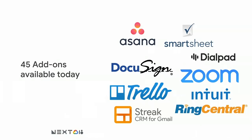Since our launch nine months ago, we've seen a wide range of enterprise developers building and shipping these add-ons for Gmail — from project management tools like Smartsheet and Asana, to CRM apps like ProsperWorks and Streak, to workflow tools like DocuSign. We have over 45 add-ons available in our catalog today, and we continue to add more and more every week.